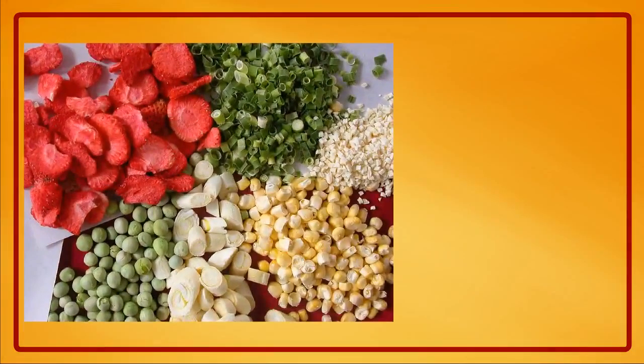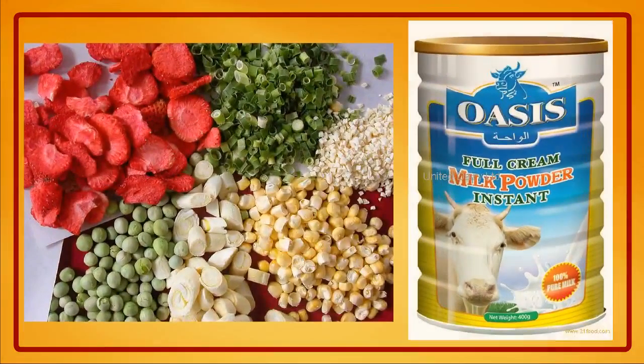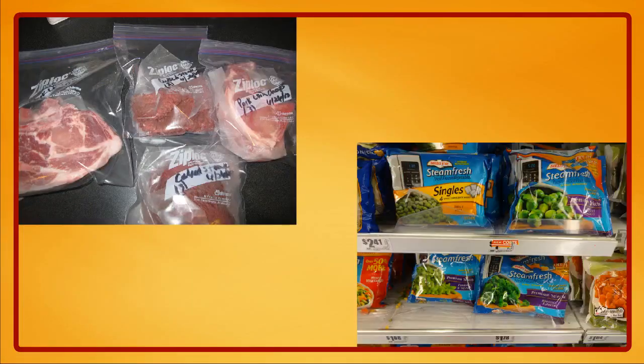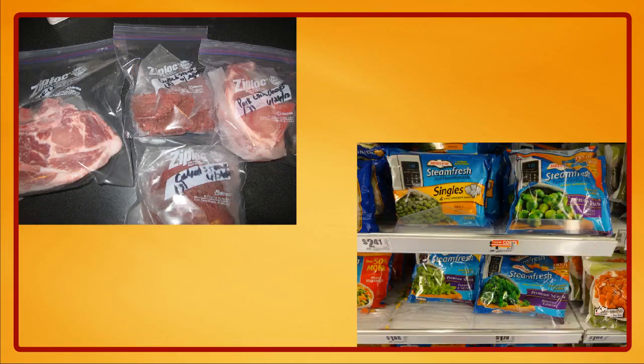Dried vegetables and milk powder are examples of dehydrated food items. Meat, pears etc. are frozen. Low temperature slows down the growth of germs.